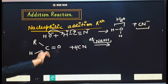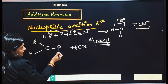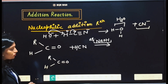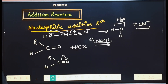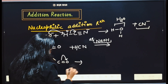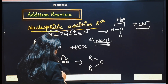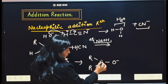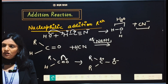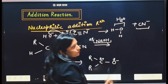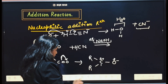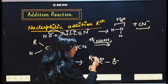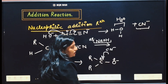Now, in the case of aldehyde — this oxygen is more electronegative than carbon, so it will attract electrons towards itself. When it attracts, negative charge will be on oxygen and positive charge will be on carbon. Where will the nucleophile approach? This nucleophile will approach the positively charged carbon, because nucleophile is nucleus-loving — it has a negative charge so it will approach the positively charged species.